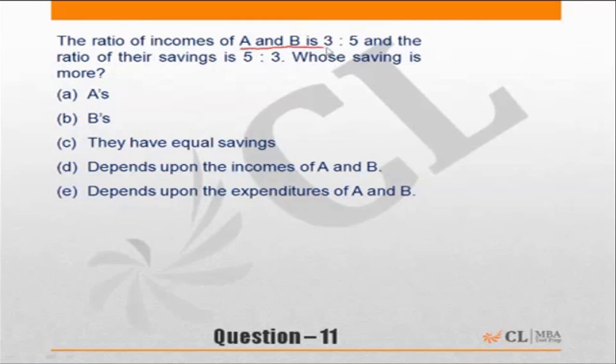And the ratio of savings is 5 is to 3 of A and B. Whose saving is more? Now this is superfluous data. This does not require the ratio of incomes.